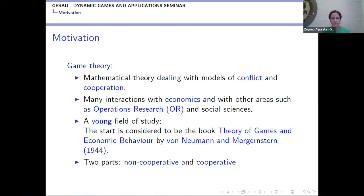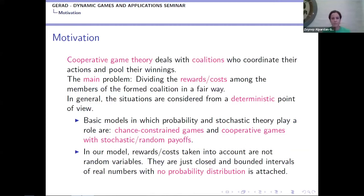Game theory has two parts — non-cooperative and cooperative — and today's topic is the cooperative case. In cooperative game theory, players deal with coalitions who coordinate their actions and pool their winnings. We have rewards or costs according to the model. Our main problem is to allocate these rewards or costs in a fair way. Fair division is important for us.